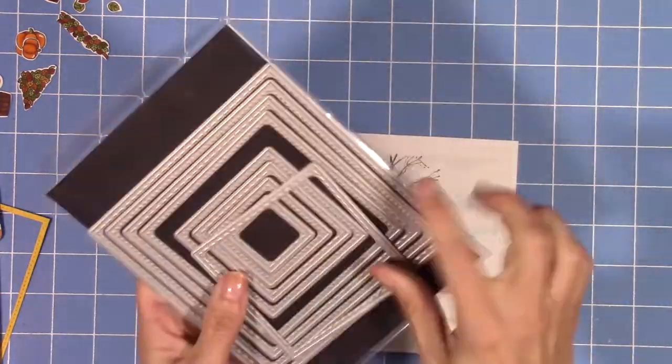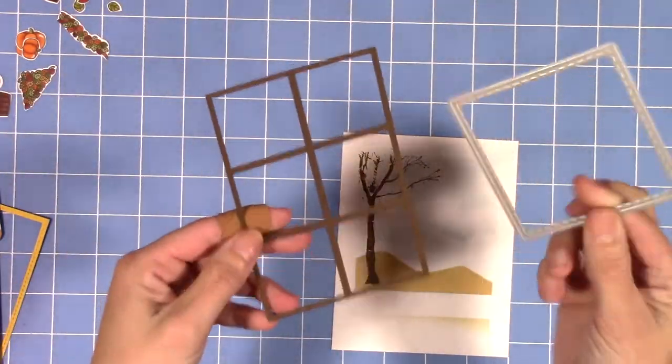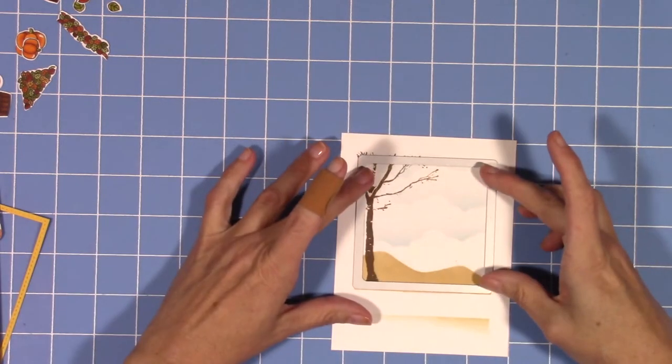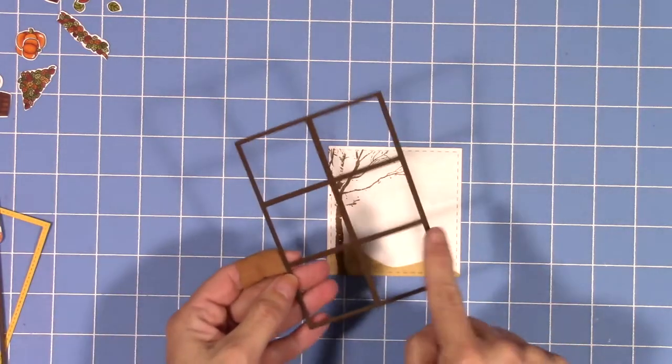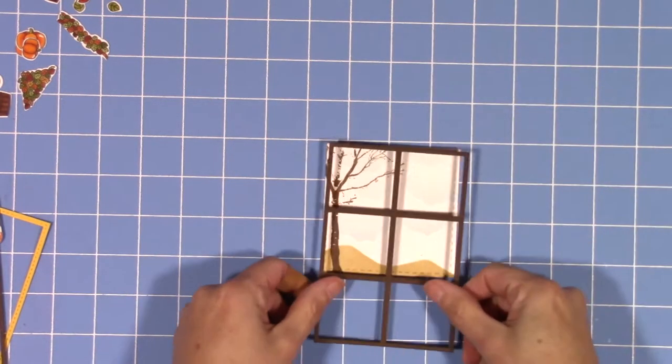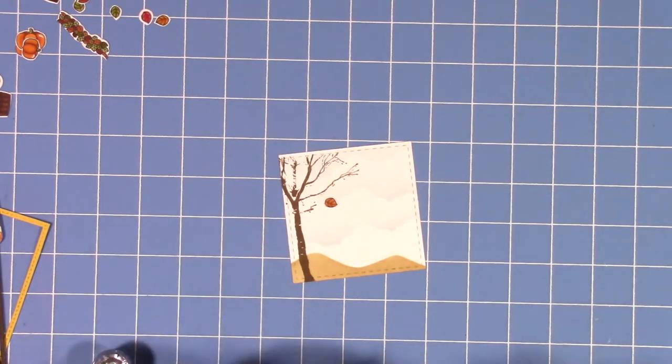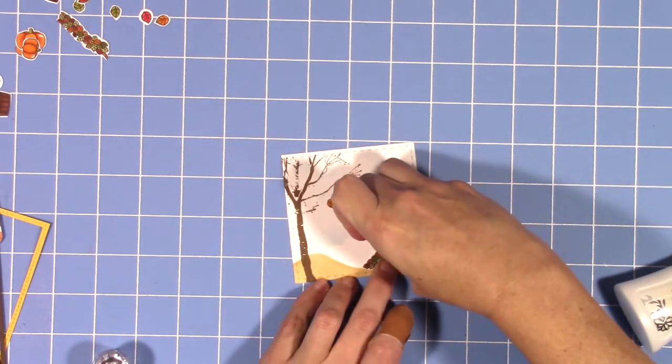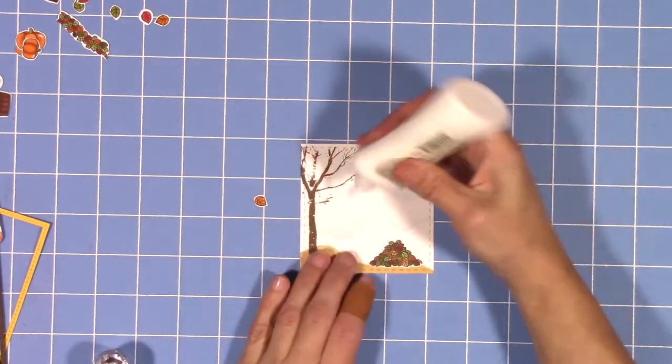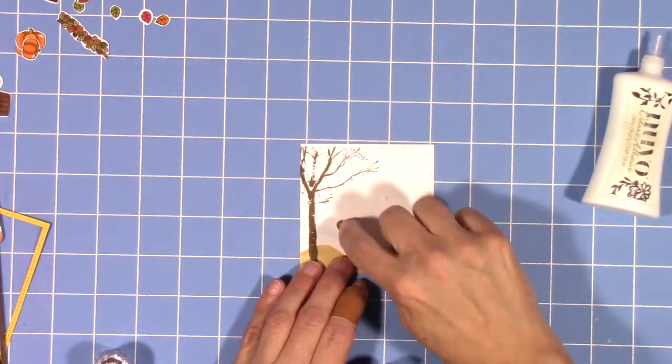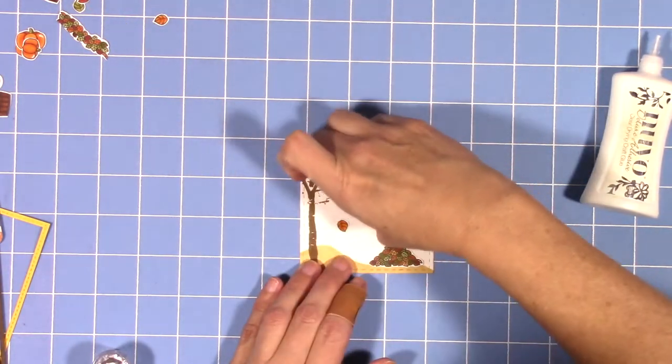Now I'm going to trim my window with my die, which luckily for me fit perfectly around the inside of where I was going to use for the window. I'm also going to trim off the bottom pieces with the brown Basil paper to just be the four-paned window. Now I'm just going to adhere down the pieces that are going inside the shaker window that I don't want to move, which is just a few leaves, the leaf pile, and some pumpkins.